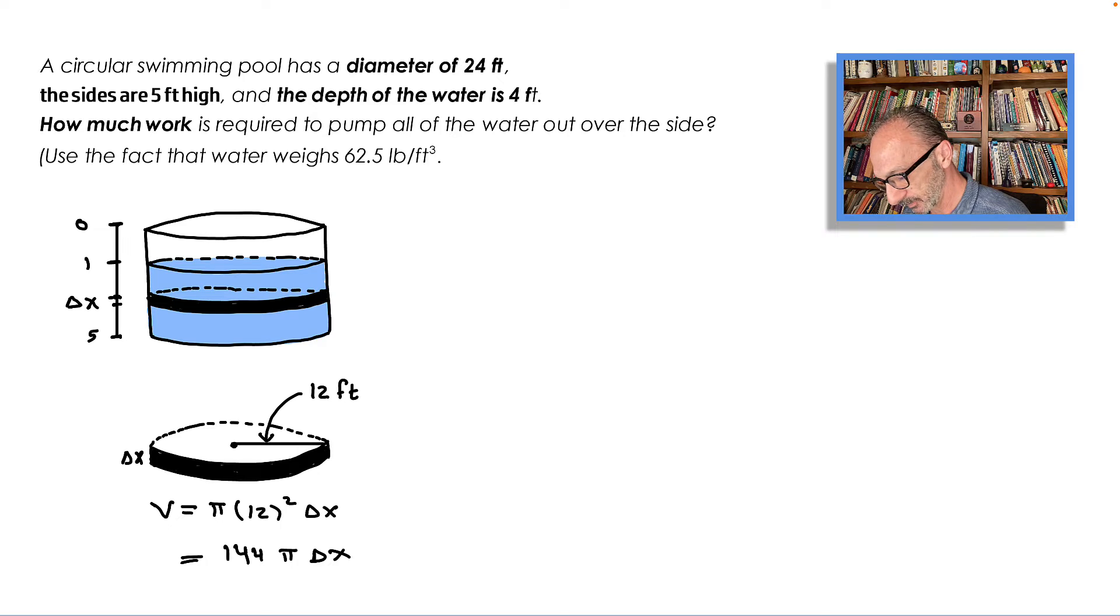The distance from this point to this point is x. We're going to work on a slice to find the volume. It's π r² times the height, and the radius is 12, so we have π times 12² times Δx, which is 144π Δx. That's the volume of the slice.